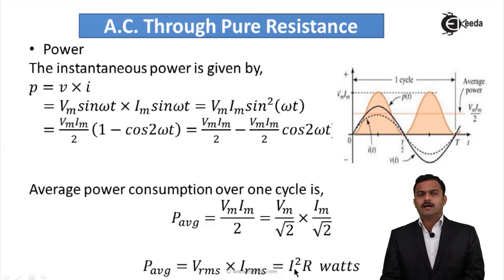In this video we have seen when AC is passed through a pure resistance what happens. First thing: voltage and current both are in phase for a resistive circuit. Second, power is nothing but Vrms × Irms, or also given as I²R. Thank you.